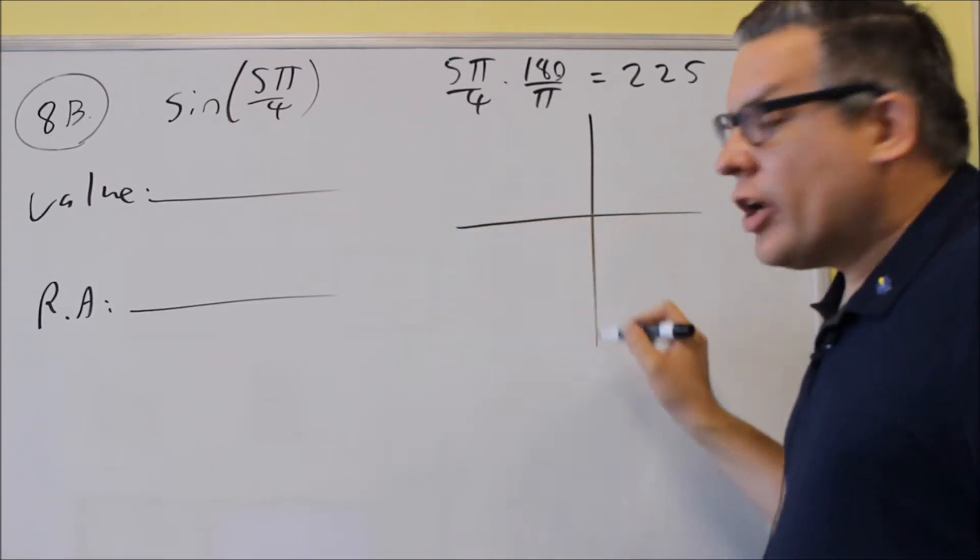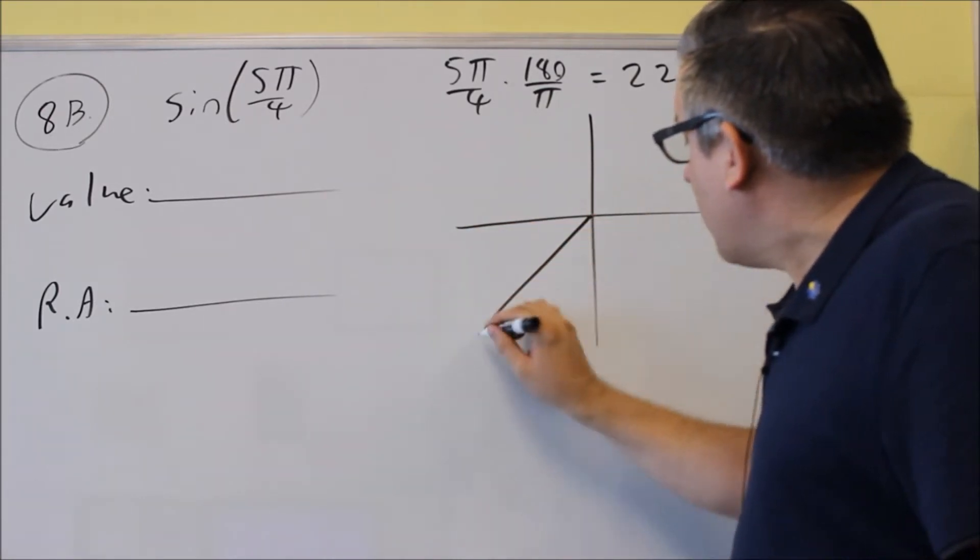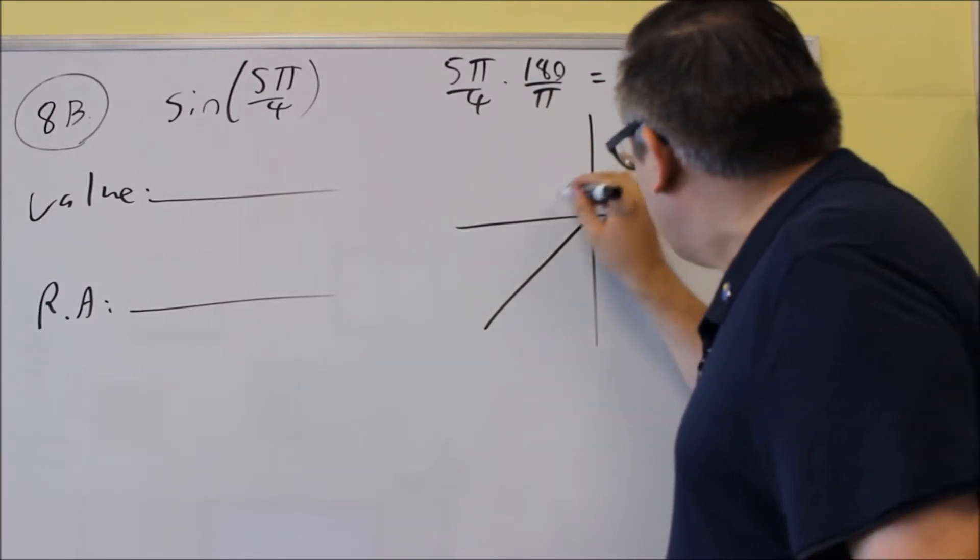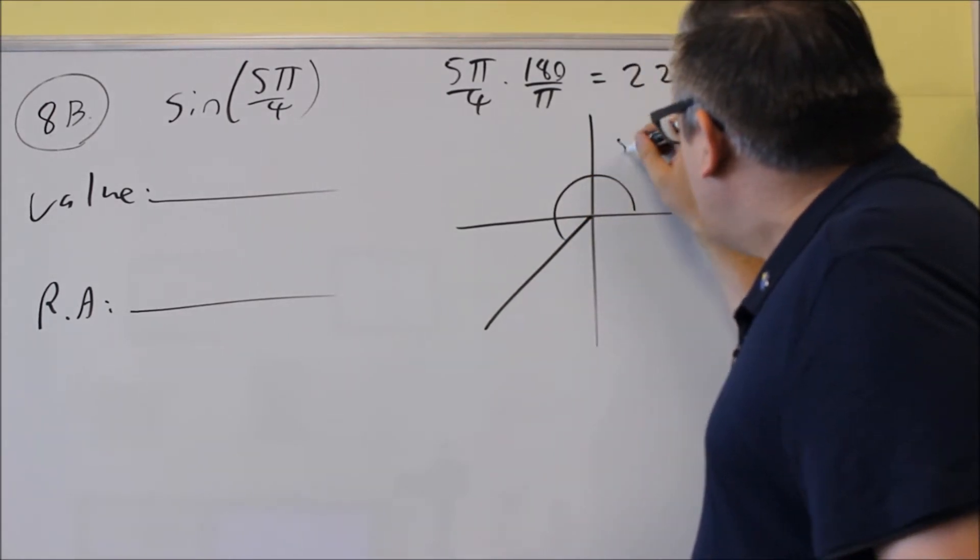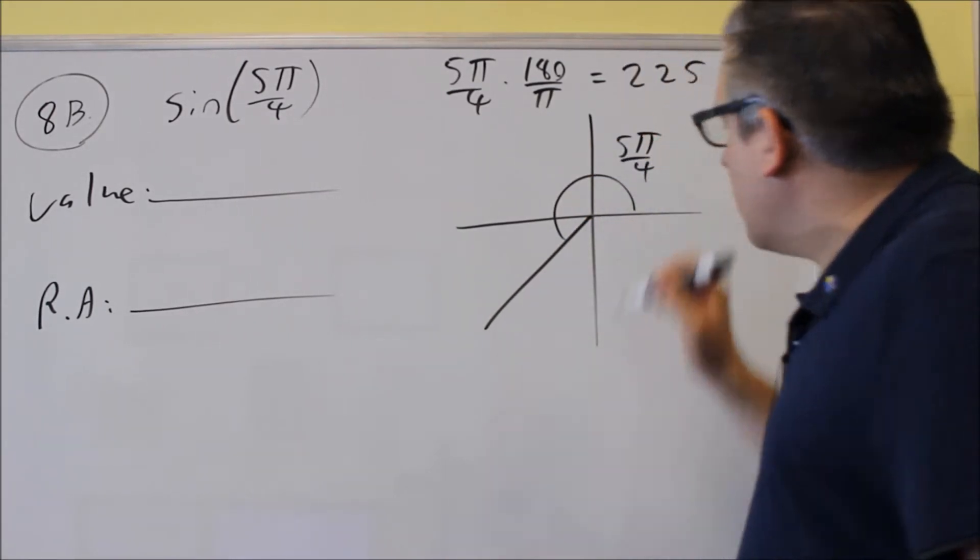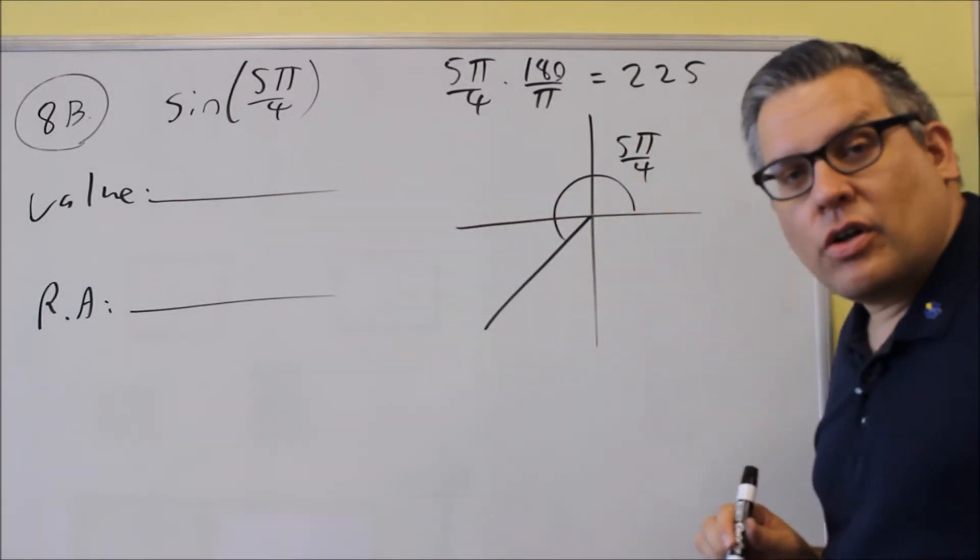So 225 is going to be between 180 and 270, so it's going to be down here in the third quadrant. So this is going to be, I'll put 5π/4 here since the original angle was in radians.